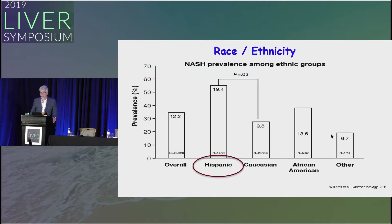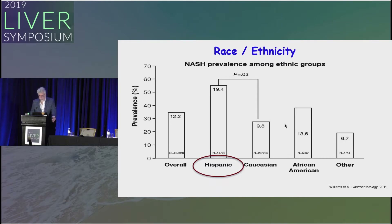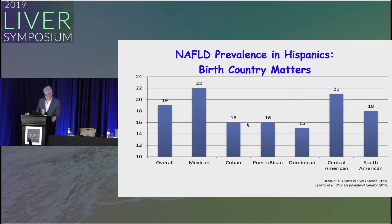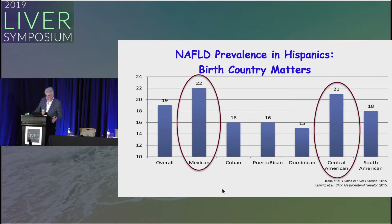Ethnicity largely determines the prevalence of NAFLD and NASH. Hispanics as a whole have a much higher prevalence than other ethnic groups. There are also differences according to birth country — the Mexican and Central American population, largely what we see in L.A. County, has a particularly high prevalence of NAFLD.